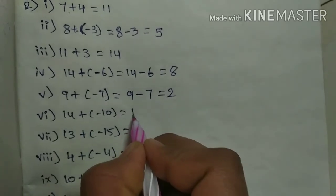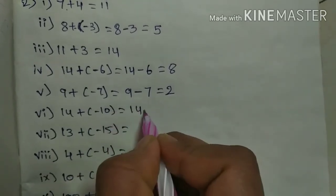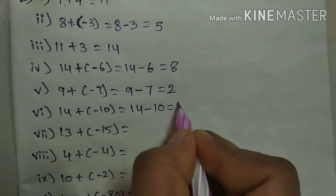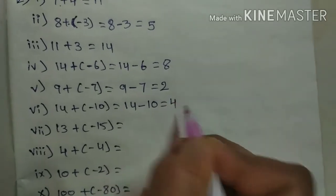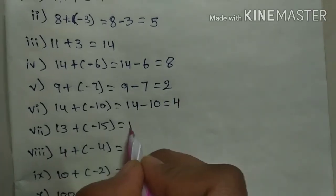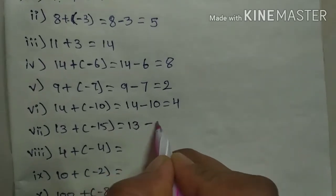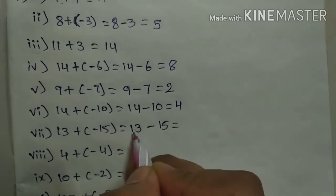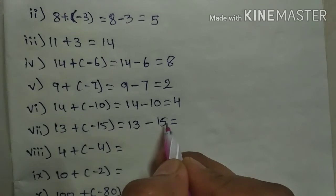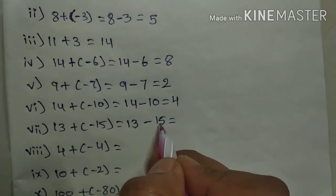Again, 14 plus into minus minus 10, so 14 minus 10 equals 4. And here, 13 plus minus minus 15. See, first small number is there, next big number is there.